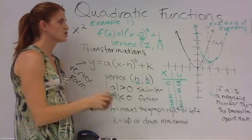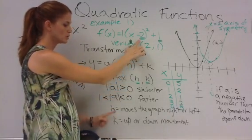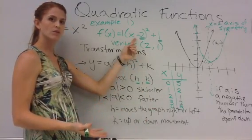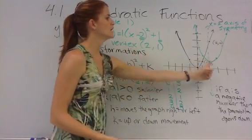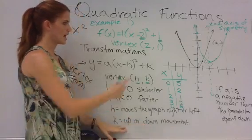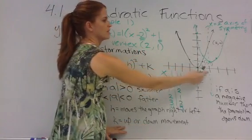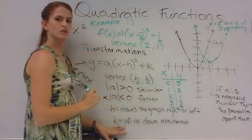Notice my transformations. It moved it 2 to the right or left. And in this case, it went the opposite the way you would think. So it went to the right two units. Then the k value moves it up 1. So from my original graph, it moved up over 2 and up 1.